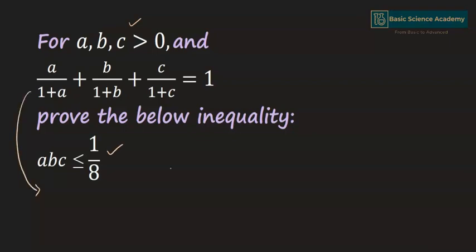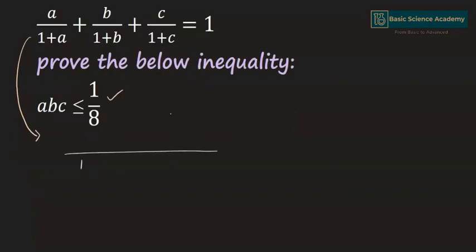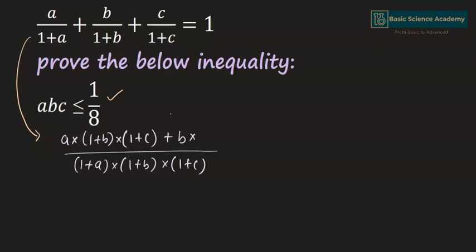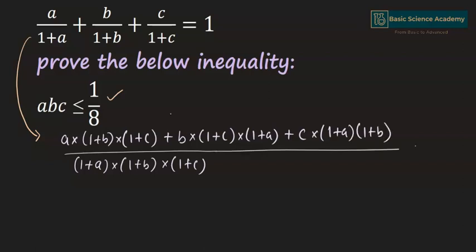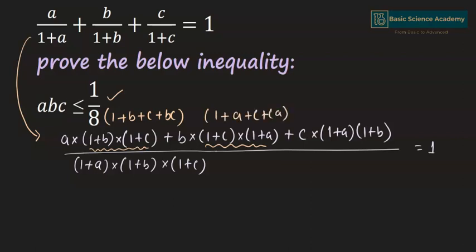First, let's simplify the given equation. The LCM of the denominators is (1+a)(1+b)(1+c). In the numerator we have a(1+b)(1+c) + b(1+c)(1+a) + c(1+a)(1+b) equals 1. Multiplying these terms gives 1 + b + c + bc, and these two terms give 1 + a + b + ab.